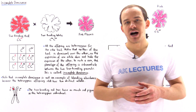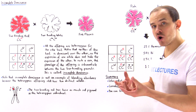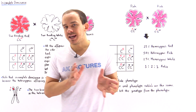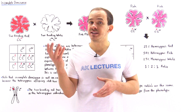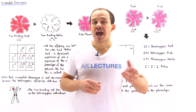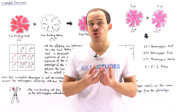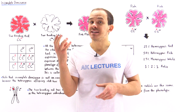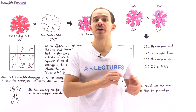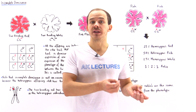So far in our discussion on genetic inheritance, we focused on a specific type of mode of inheritance known as complete dominance. In complete dominance, we have the existence of a dominant gene and the existence of a recessive gene. When we mix a dominant gene with a recessive gene to produce a heterozygous individual, that dominant gene basically hides and inhibits the effect of that recessive gene.